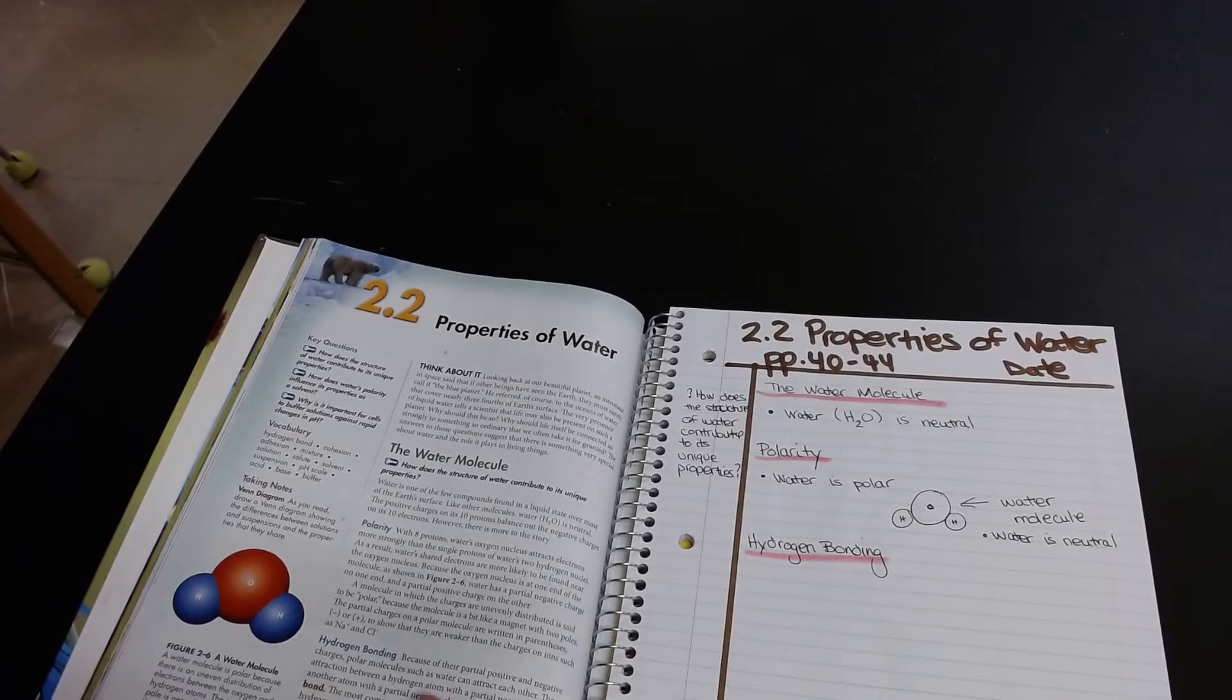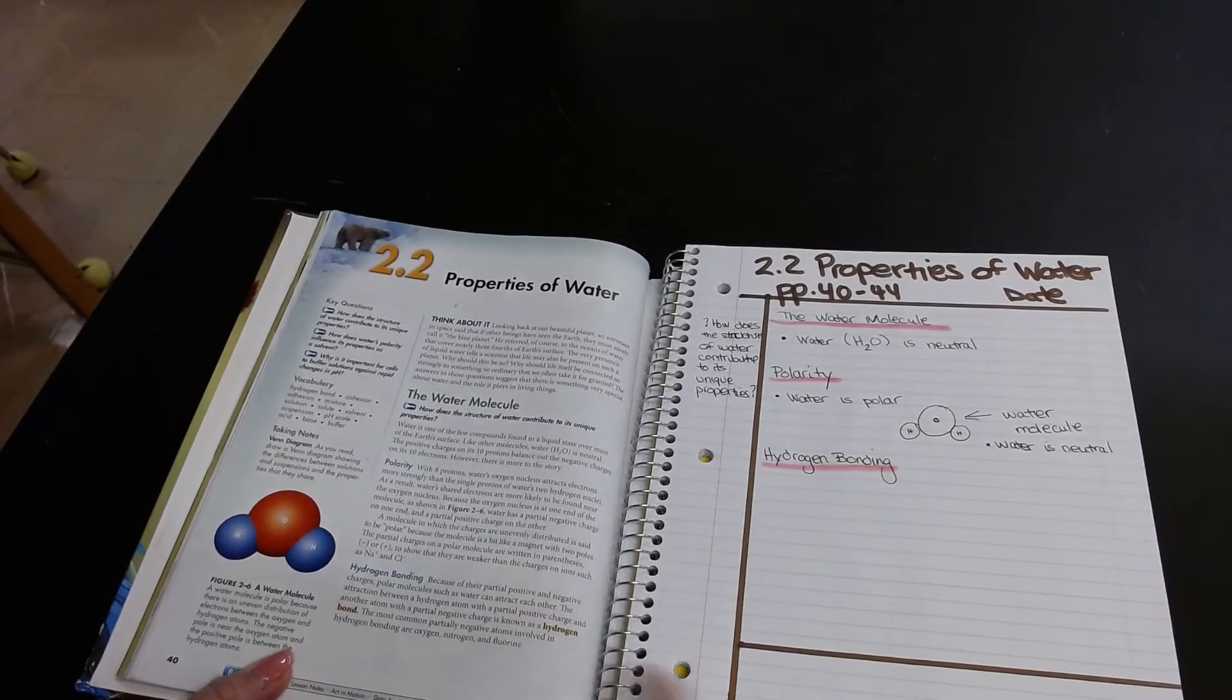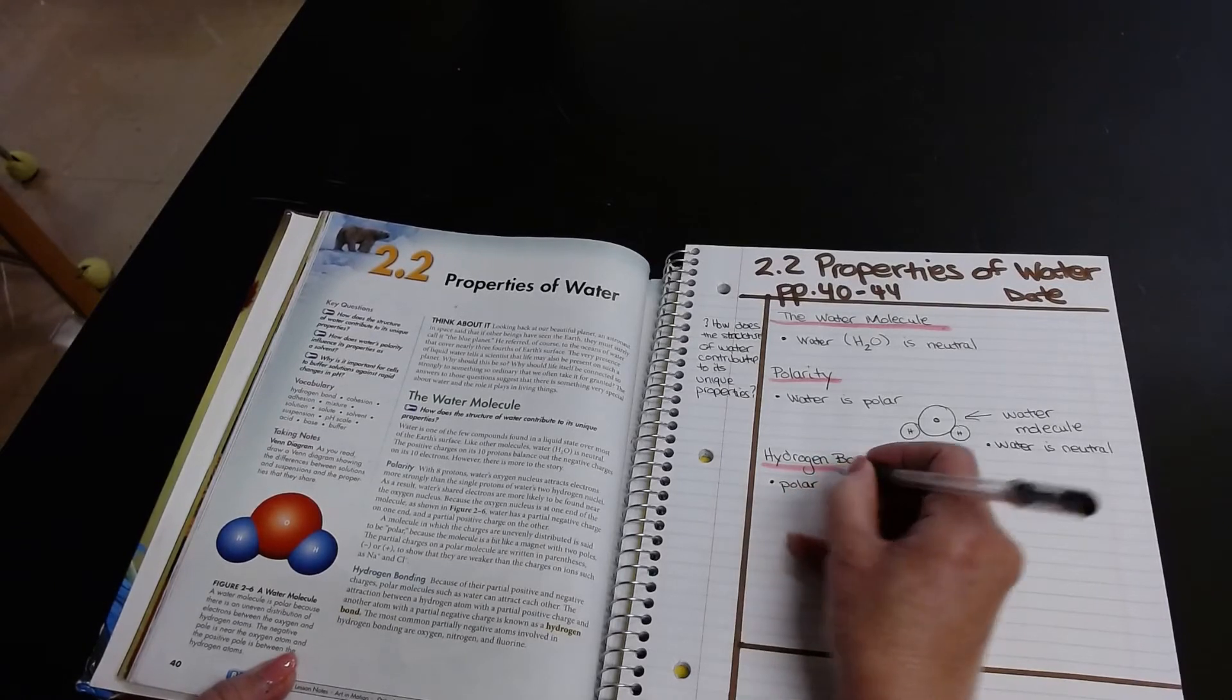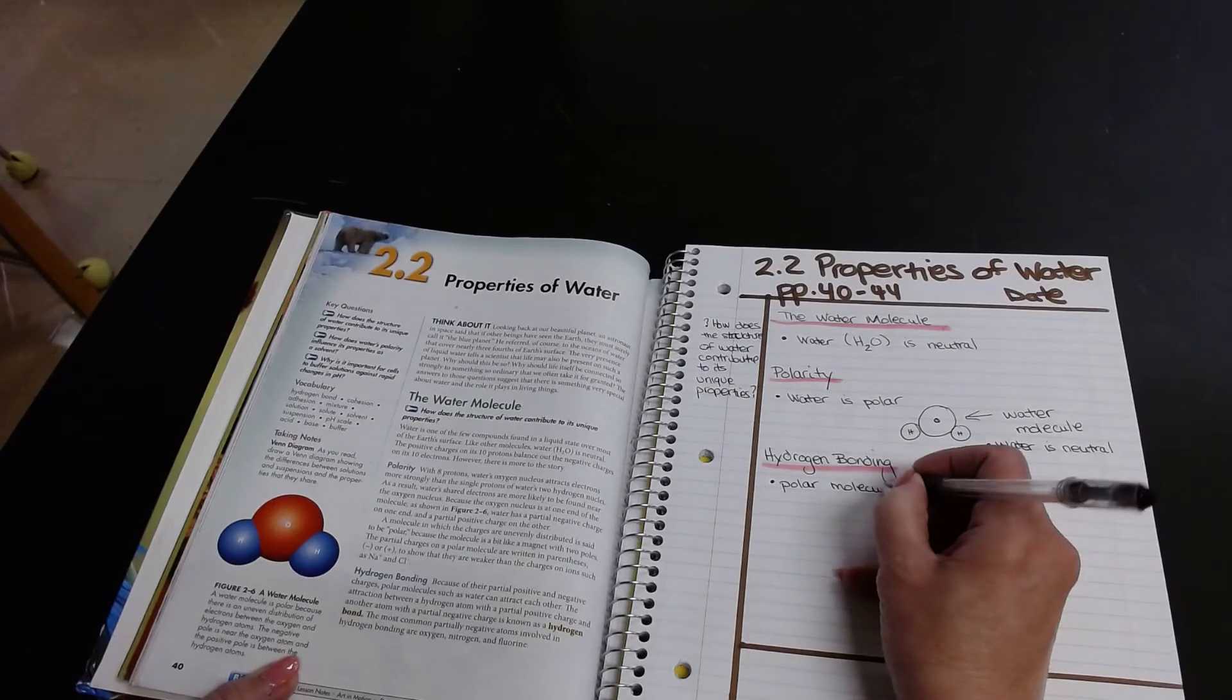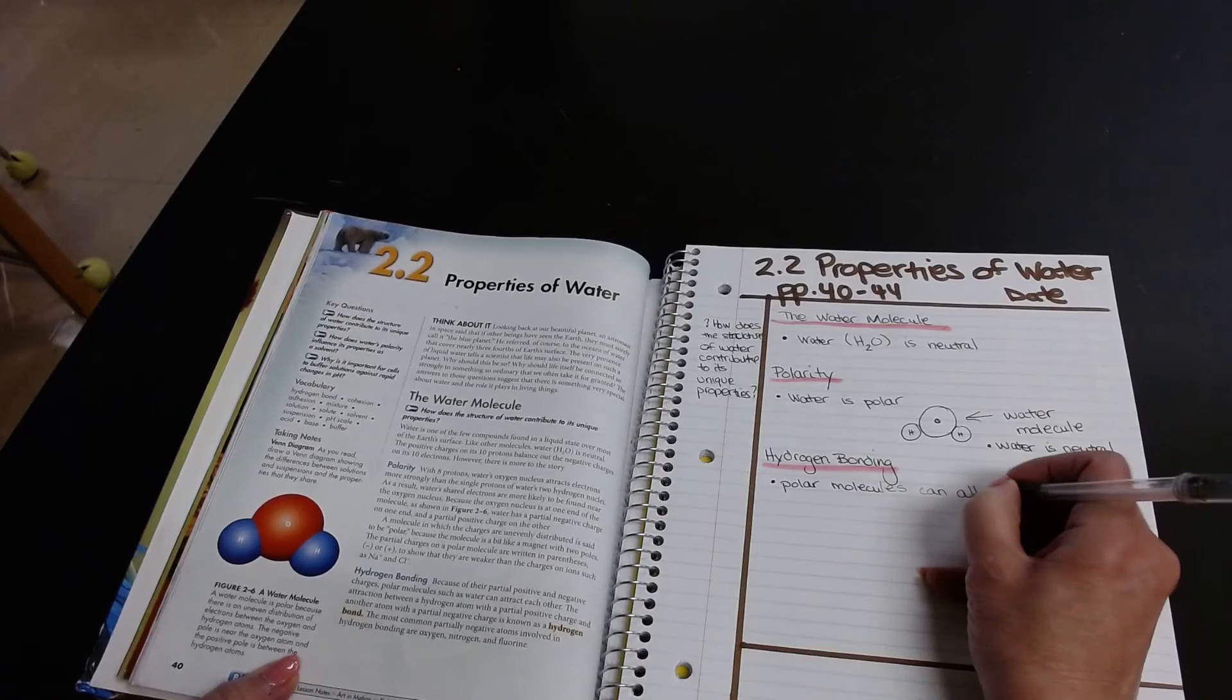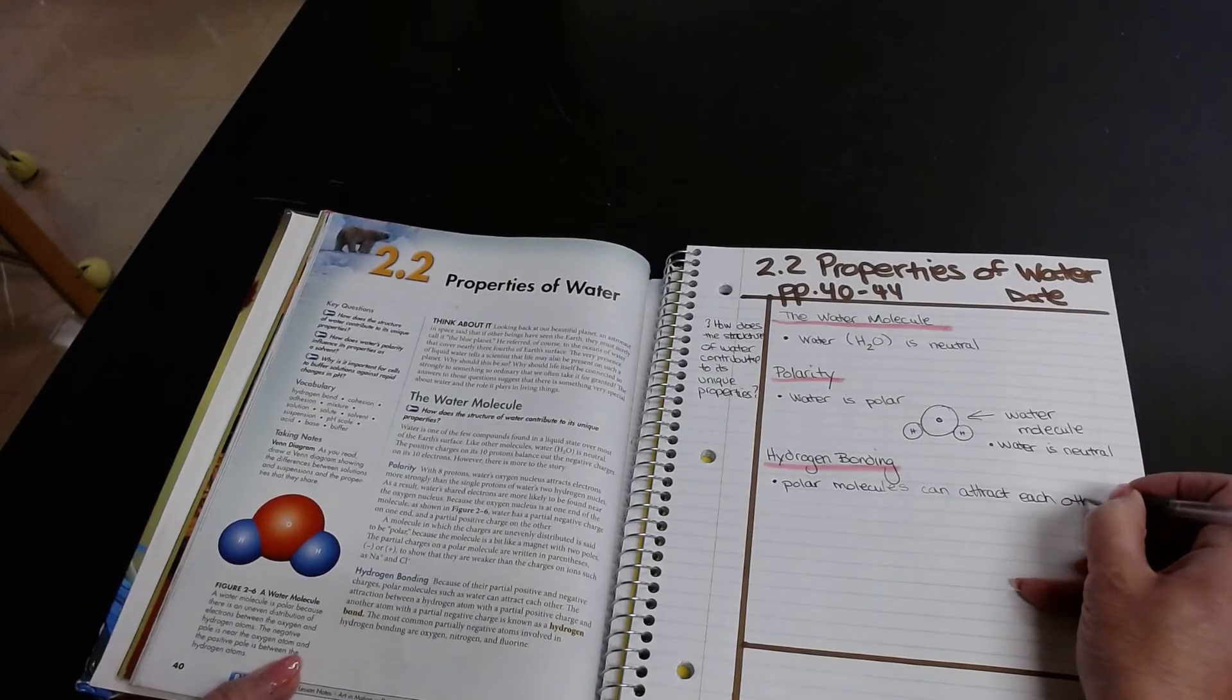And then I'm going to say, because of their partial positive and negative charges, polar molecules such as water can attract each other. So first thing I'm going to write is polar molecules can attract each other. And that is really important in understanding the biology, the biochemistry of water.